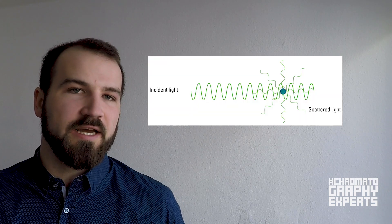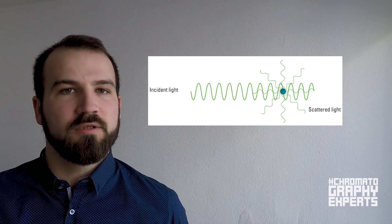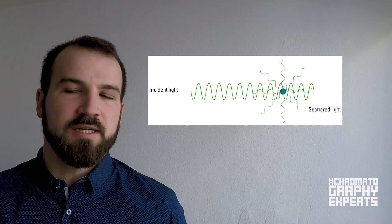In light scattering we have one laser that points directly on the flow cell, and then around the flow cell we have our detectors positioned at different angles to see the scattered light that is scattered by the sample flowing through the flow cell at different angles. From the position of these angles we can do various calculations about the molecules that flow through the flow cell.